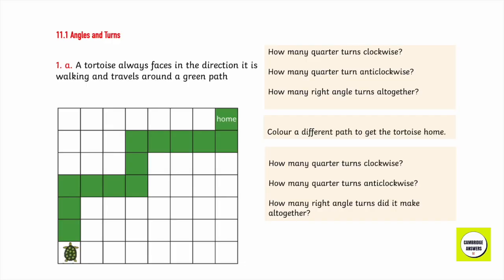The tortoise always looks in the direction he's walking. He travels along the green path. How many times did he turn a quarter turn clockwise? How many times did he turn a quarter turn anti-clockwise? How many right angle turns did he make altogether?